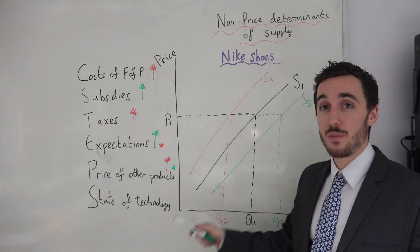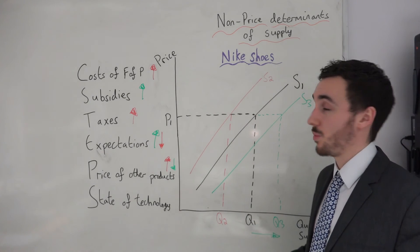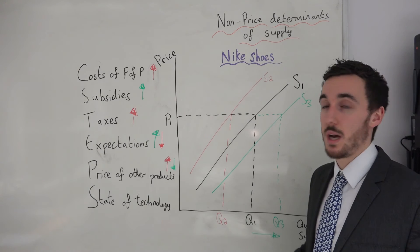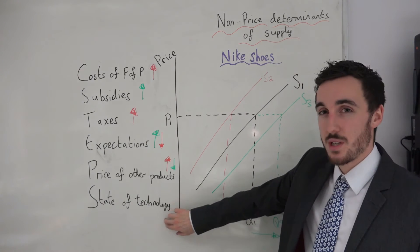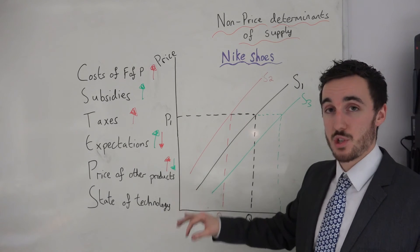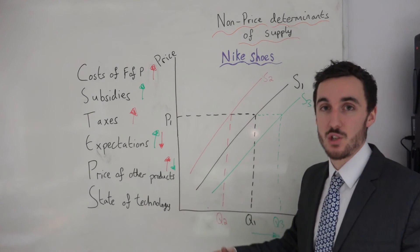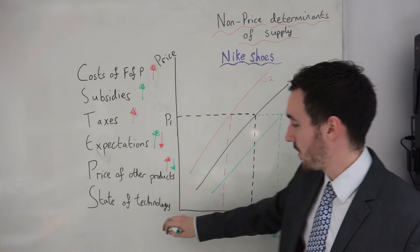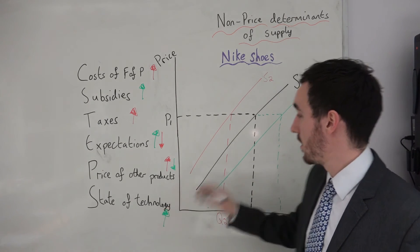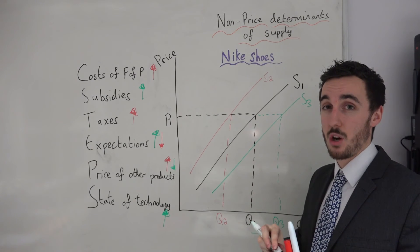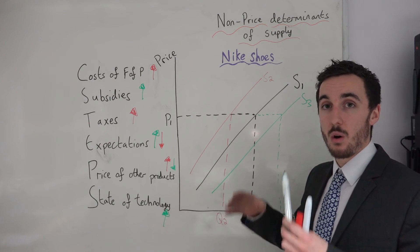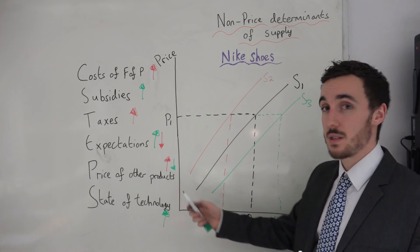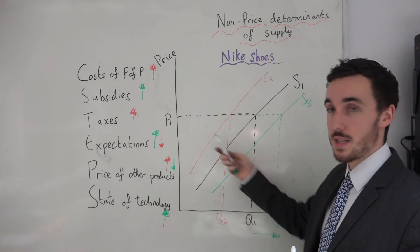Lastly, we're going to look at the state of technology. Let's assume we are using a machine to produce our shoes. The machine before was able to produce 100 Nike shoes, but now our state of technology has increased and the machine is able to produce 150 shoes instead, with our costs unchanged. If our technology increases, we are able to produce a lot more goods, either because our costs have gone down or because we can simply produce more with the same machinery. So if our state of technology increases, our supply will shift to the right at the same given price.